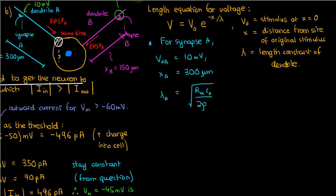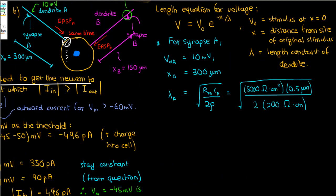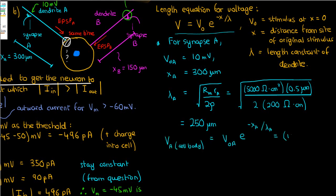Lambda A equals the square root of Rm times r_A divided by 2 times rho, where Rm is membrane resistance, r_A is the radius of dendrite A, and rho is cytoplasm resistivity. The radius of dendrite A is half its diameter, so 0.5 microns. Note that length units must be consistent, so we convert between centimeters and microns. Plugging in all values gives a length constant lambda A of 250 microns.